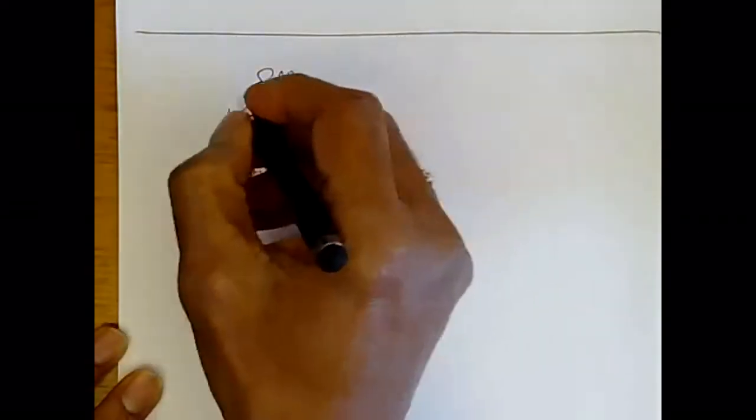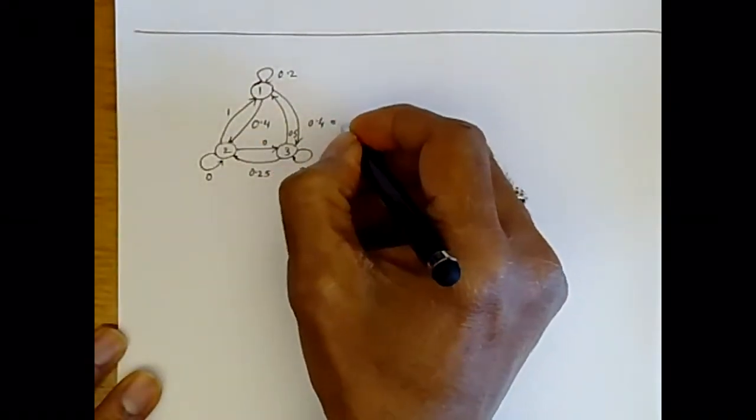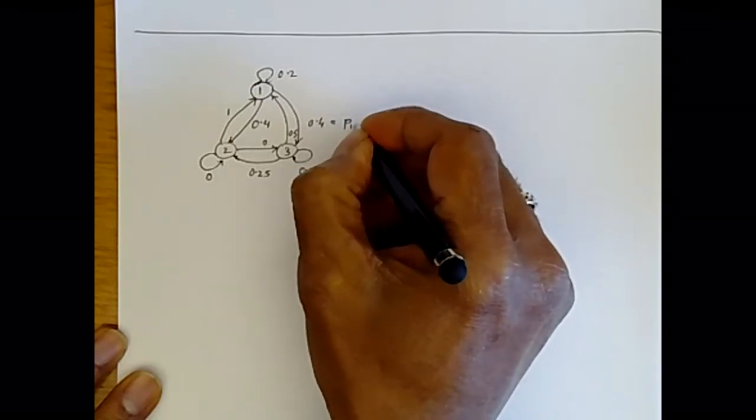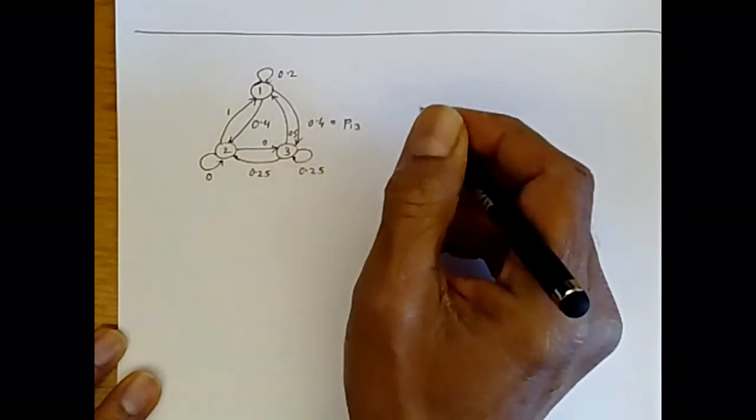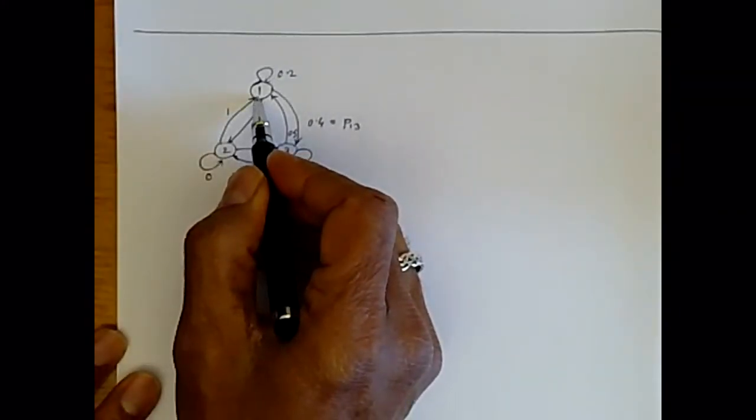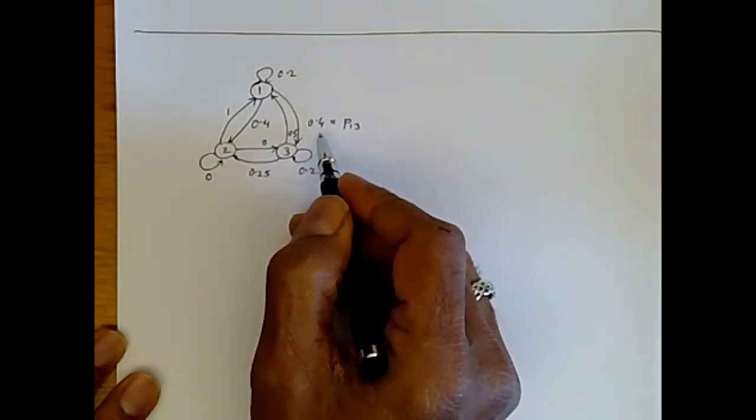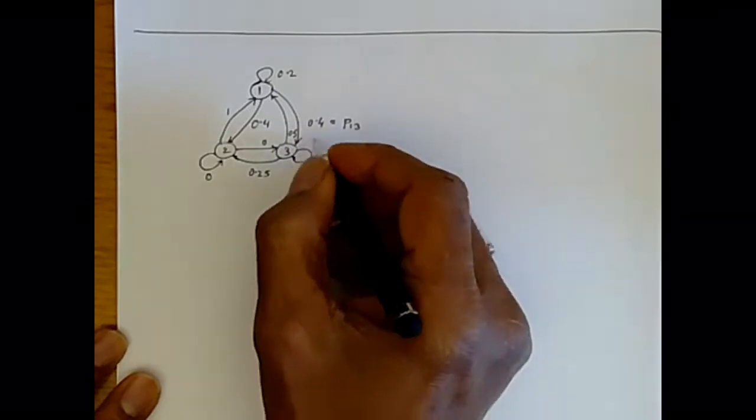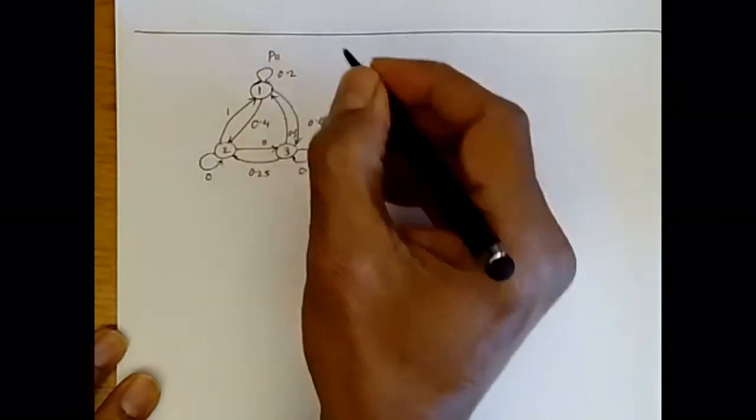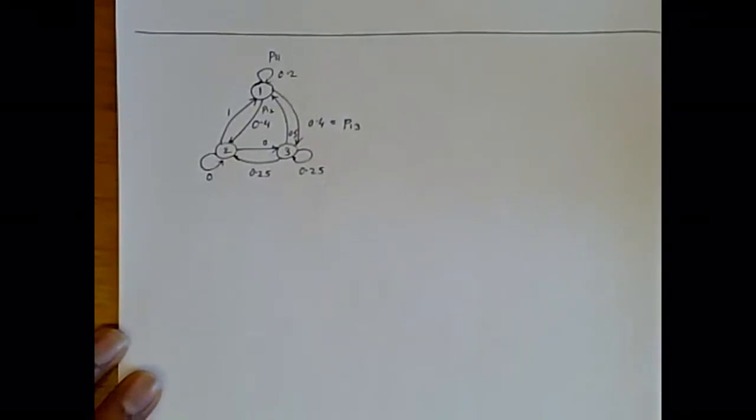And if we label the states as one, two, three, then we can also call this, for example, 0.4 is the transition probability going from one to three, so you can call it P13. And this depends only on the fact that you're at state one, that's the Markov property. And it's independent of time, it happens no matter what time it is because of the homogeneity property. And so we can write this as P13, this is going to be P11, and this transition probability over here is P12. And we can label the others likewise.